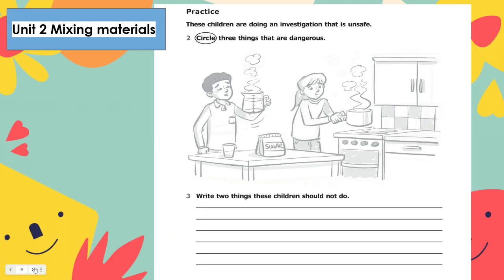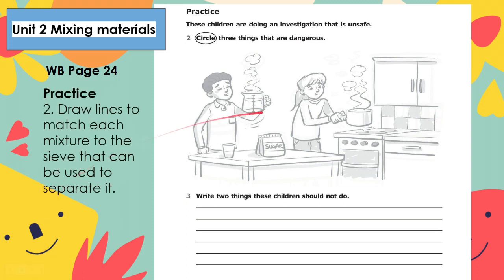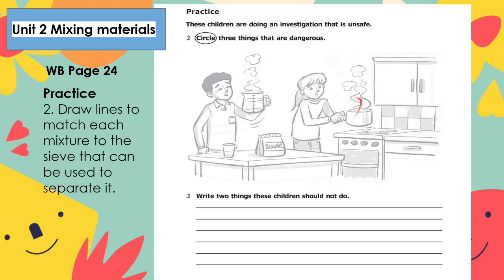Now let's do page 24, number two, Practice. These children are doing an investigation that is unsafe — circle three things that are dangerous. Look at the picture carefully. One is inhaling chemicals or dangerous gases, which can cause headaches and even fainting. Also, handling hot items without the proper tools can result in serious burns. And handling chemicals without wearing protective gloves is also dangerous.